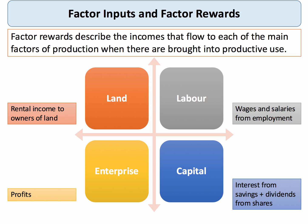So, land — owners of land can generate rental income, for example, people who buy to let property, or farmers who rent out their land to other growers and organisations. The main reward to labour are the monthly or weekly wages and salaries from employment, and also increasingly from self-employment. The main reward to enterprise is profit.